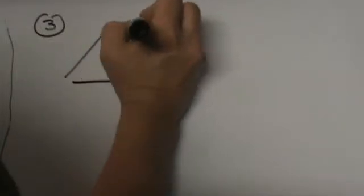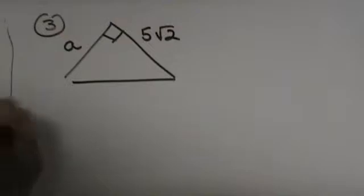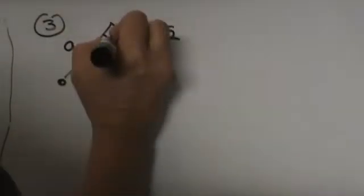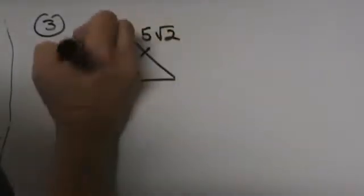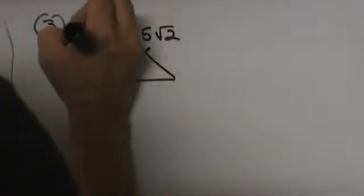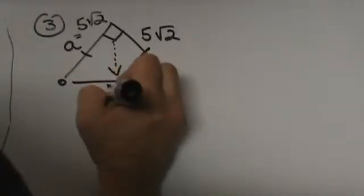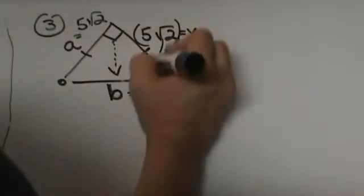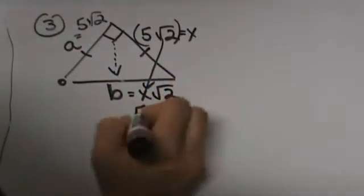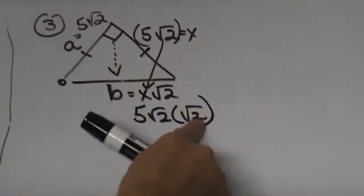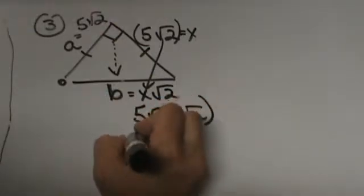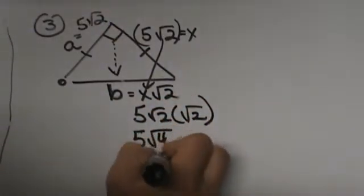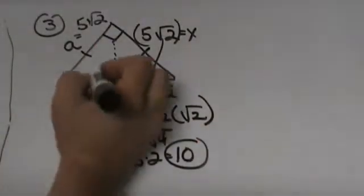Let's look at number 3. This time we are given a leg, but it is 5√2. We don't know leg A or hypotenuse B yet. Since the legs are congruent, A is also 5√2. To find B we use the formula x√2, so we plug in 5√2: that gives us 5√2 times √2, which is 5 times √4 = 5 times 2 = 10. So the hypotenuse is 10.